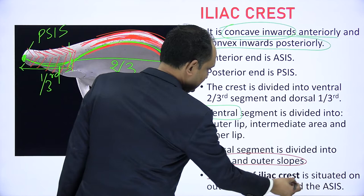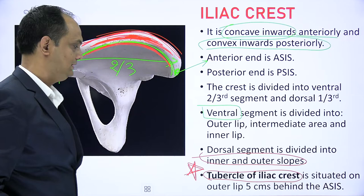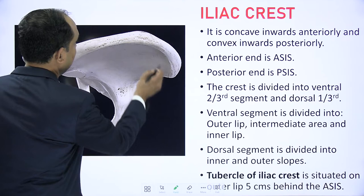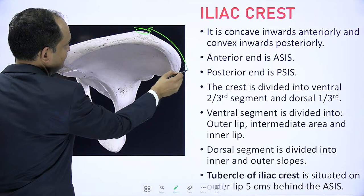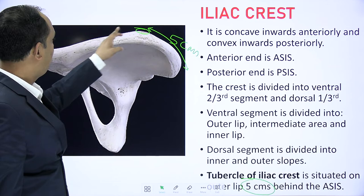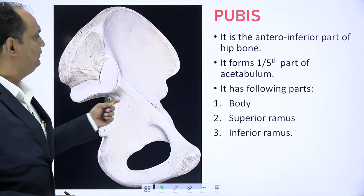One more important bony landmark is the tubercle of iliac crest. The important question is: the tubercle of iliac crest is present on the outer lip or inner lip? The answer is outer lip. The tubercle is present on the outer lip and the distance of the tubercle from ASIS is around 5 centimeters. So: tubercle of iliac crest is a feature of the outer lip of the hip bone, and the distance from ASIS is around 5 centimeters.